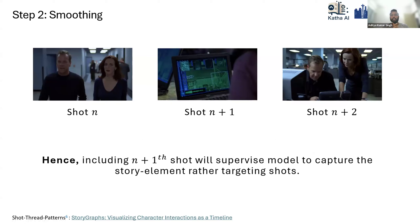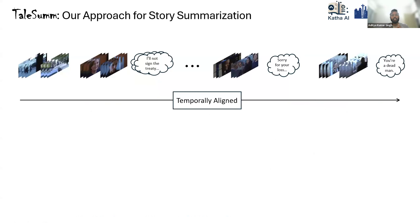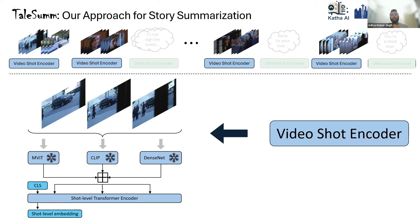Our approach for story summarization introduces TaleSumm — a two-level hierarchical transformer model for identifying sub-stories in a TV episode. At level one, we extract video shot embeddings from constituent raw frame embeddings. Frame embeddings are generated using visual backbones — MBIT, CLIP, DenseNet — all frozen. We fuse these features in a special manner, then pass the fused shots into a shot-level encoder where we do CLS pooling to get shot-level embeddings. For dialogue, we use a fine-tuned RoBERTa, applying average pooling to get sentence embeddings from the raw SRT transcript files.